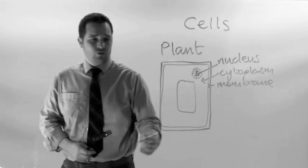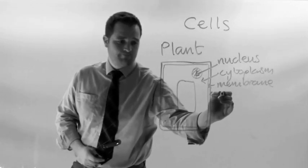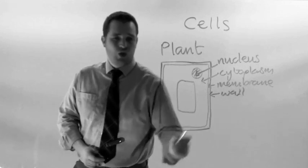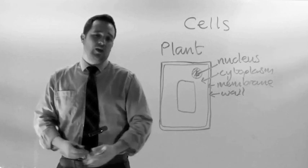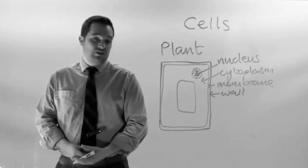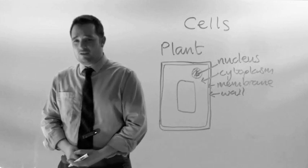But unlike the animal cell, it also has a cell wall, a rigid coating of cellulose. It gives the cell rigidity in the same way that a skeleton does in a human being.